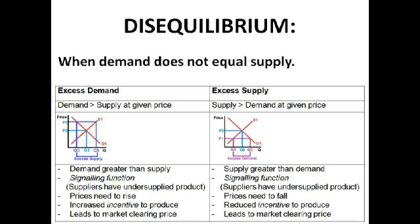Excess supply is essentially the opposite of excess demand — supply is greater than demand at a given price. So at P1, Qs is greater than Qd, which means the price needs to fall for them to match. If the price falls, there will be a contraction of the supply curve because there's less incentive for firms to produce and they can make less profit, and some firms will be forced out of the market.